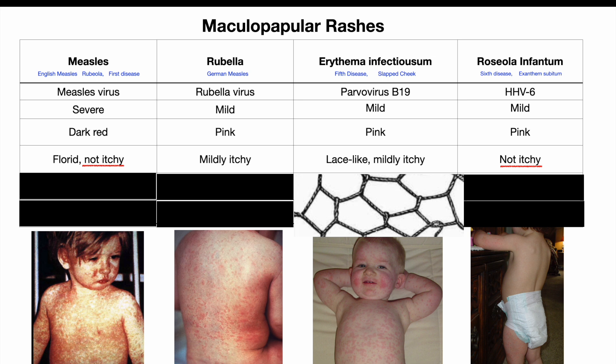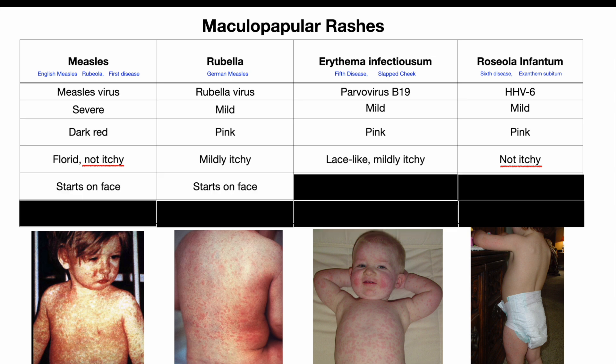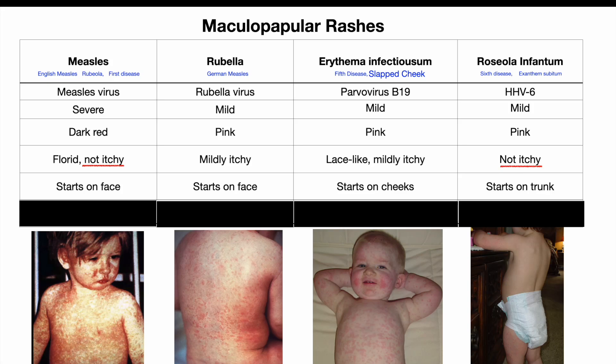Measles and rubella rashes start on the face and work their way downwards, whereas erythema infectiosum — or as its very useful and descriptive alternative name suggests, slapped cheek disease — starts on the cheeks specifically. Finally, roseola initially starts on the trunk before spreading. So you already have quite a bit to go from, ranging from the severity of the infection to the colour, the pattern and the origin of the rashes on the body.